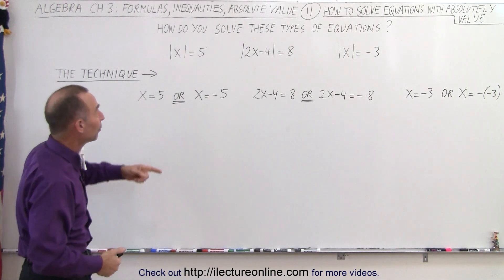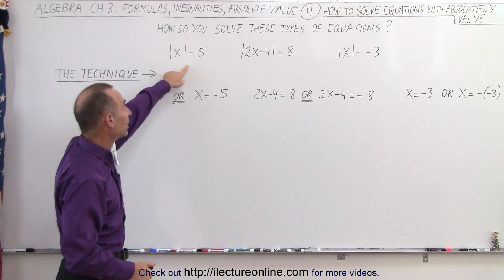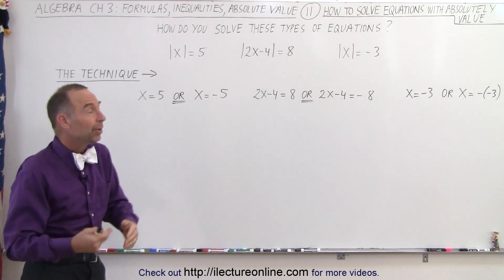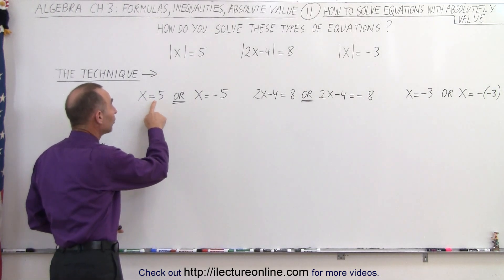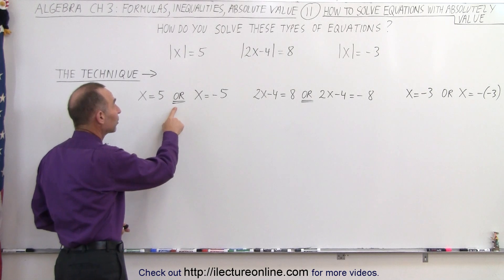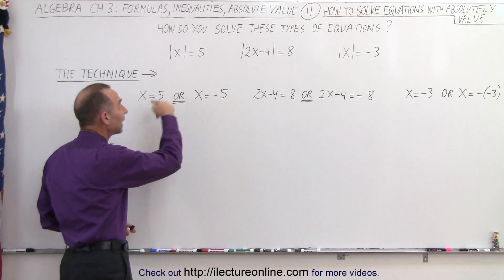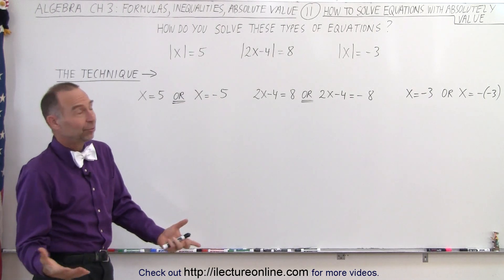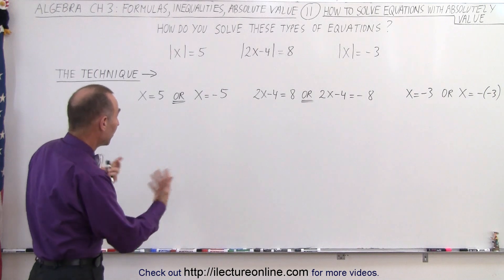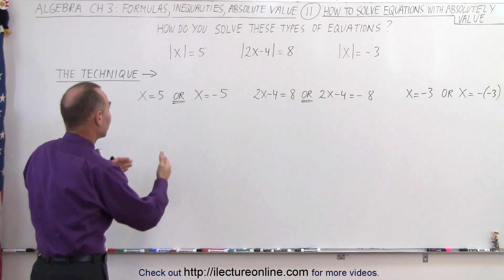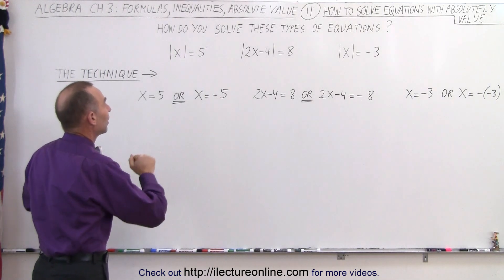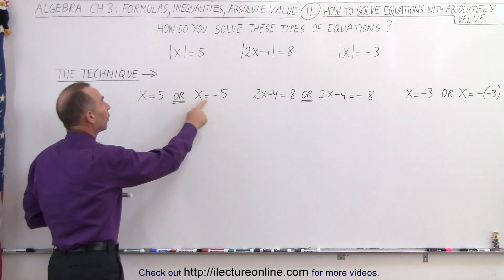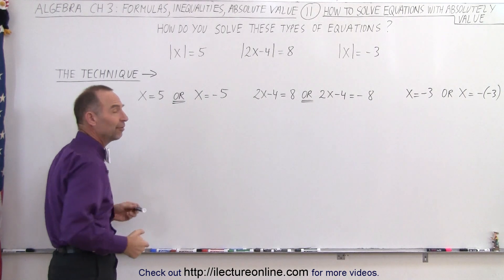For example, when we have the absolute value of x equals 5, what that really implies is that x will equal 5, or x will equal the negative of that, negative 5. And at this point, we're already done. The solution is that x equals 5, or x equals negative 5.